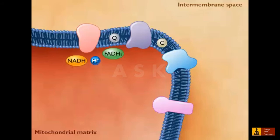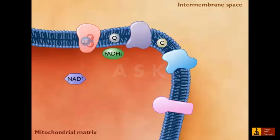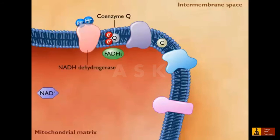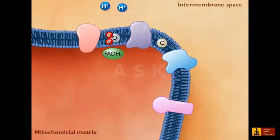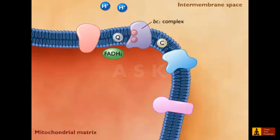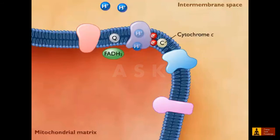Inside the mitochondrial matrix, the electrons from NADH are transferred to the electron carrier coenzyme Q by NADH dehydrogenase, and the protons are transferred across the membrane to the intermembrane space. Coenzyme Q carries the electrons to the cytochrome BC1 complex. As the electrons move from the BC1 to cytochrome C, more protons are carried from the inside to the outside of the membrane.